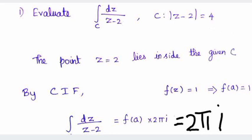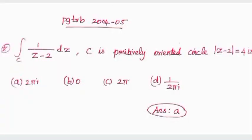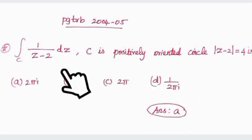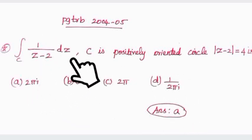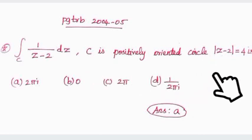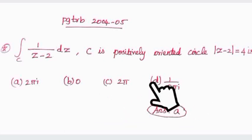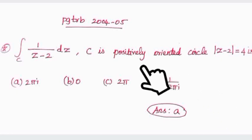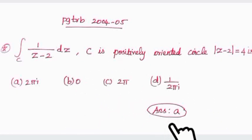This is a PGTRB 2004 and 2005 question. The question asks to evaluate ∮_C 1/(z − 2) dz, where C is a positively oriented circle |z − 2| = 4. The answer is 2πi, which is option A.